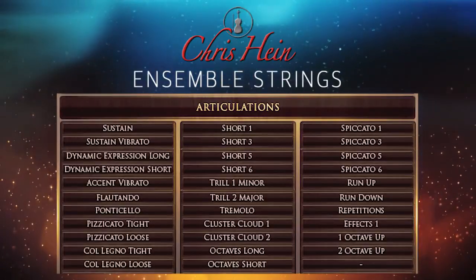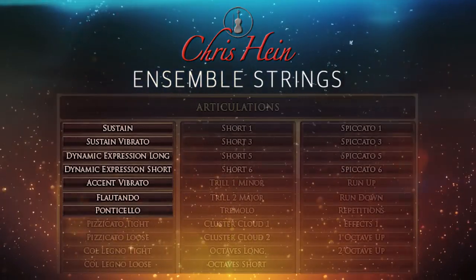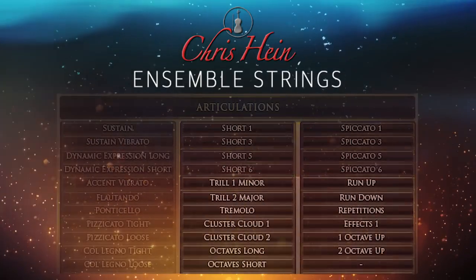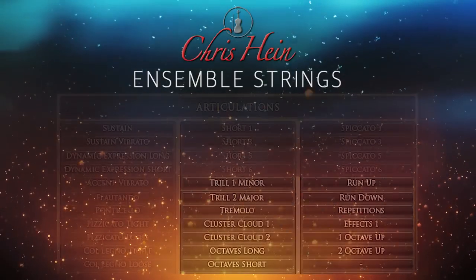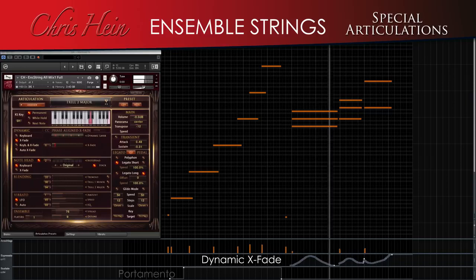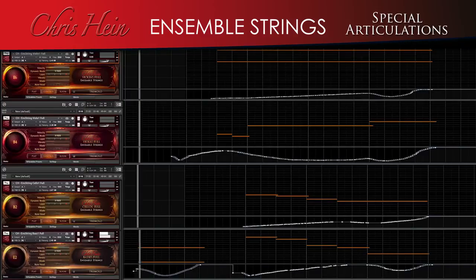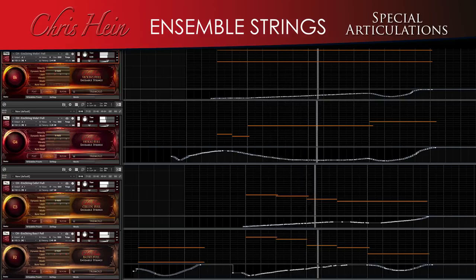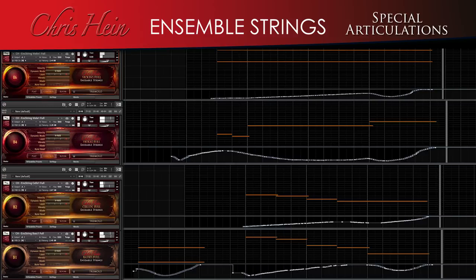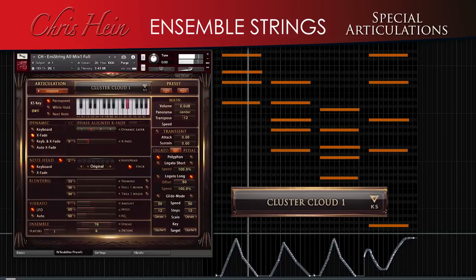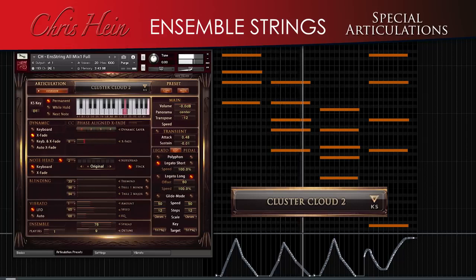In this huge articulation list you'll find 7 different sustained articulations, 12 different shorts, and 13 special articulations like trills, tremolo, cluster clouds, and octaves.